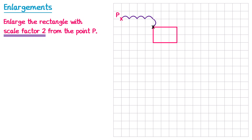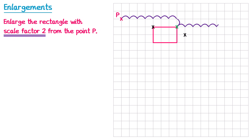We've already done the journey once, so we do it once more: four squares to the right and one square down, placing the black cross at the new position. Next we select the top right corner. From P to this green cross is 7 to the right and 1 down. We repeat that once more: 7 to the right and 1 down. So the green cross ends up at its new position.